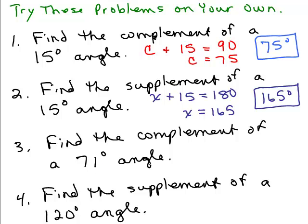All right, number three. Find the complement of a 71 degree angle. Again, up to you if you want to write an equation, we could call it C plus 71 equals 90. And when you subtract 71, you get 19. So my answer here would be 19 degrees. And again, you would verify that, 71 plus 19 equals 90.